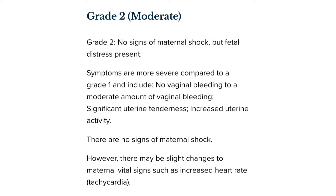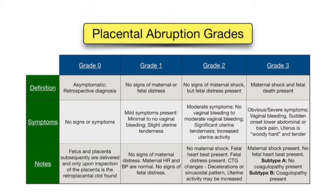Class 3 placental abruption is severe, with either concealed or heavy bleeding, maternal shock, severe uterine tenderness, and possible fetal death. Importantly, Class 2 and Class 3 represent complete separation of the placenta, whereas in Class 1 there is still a partial connection to the decidua allowing some nutrient and oxygen delivery to the fetus.